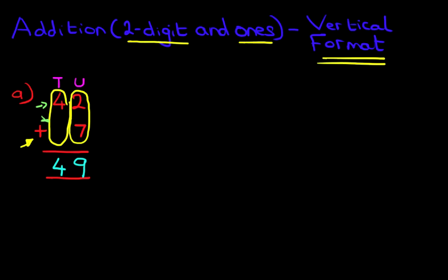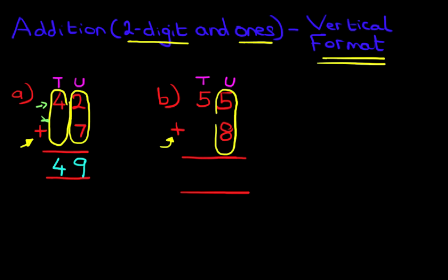Now, let's have a look at our second example. This time we have 55 plus 8. First things first, look at the sign. It is plus, addition. Let's label the columns again. This time we have U for units and T for tens. And now we are ready to do the addition. Where do we start? We start with the column on the right-hand side first. The units.